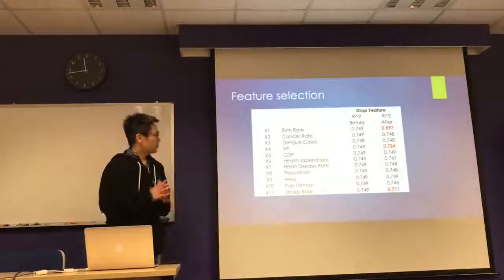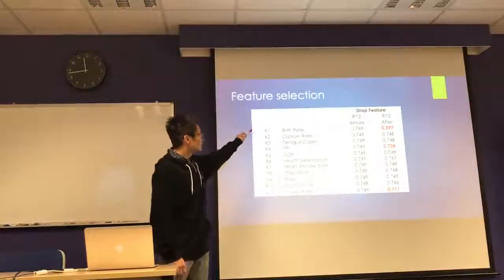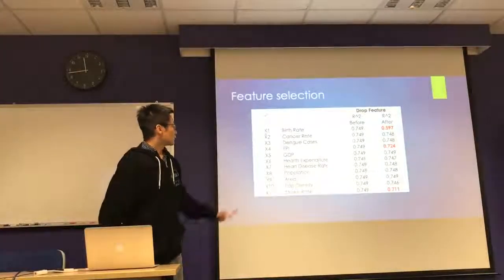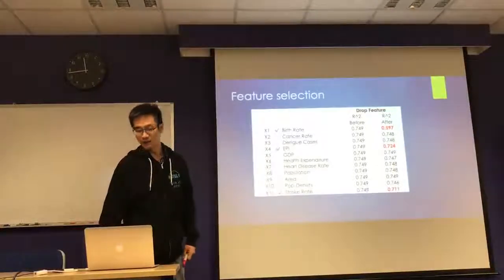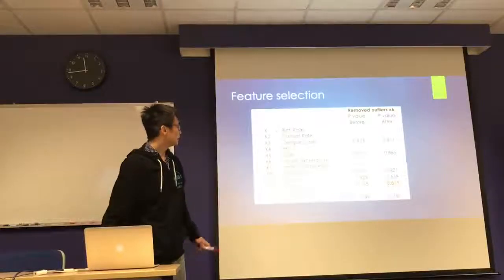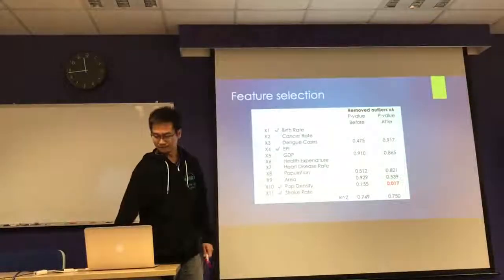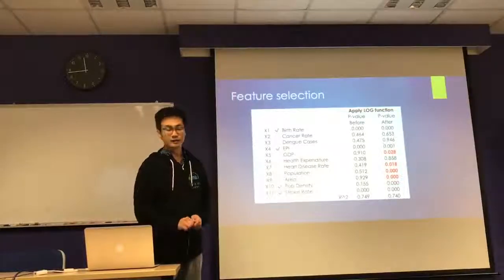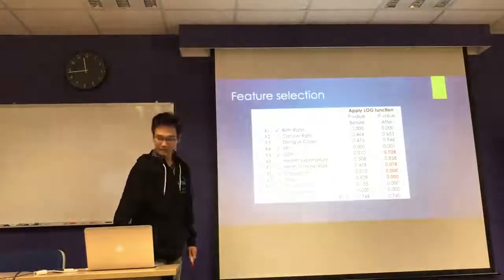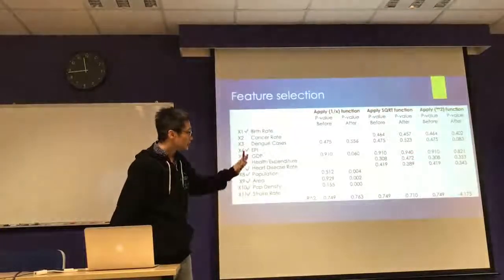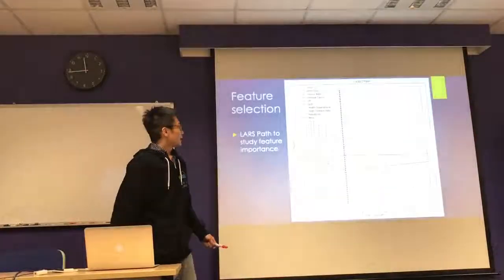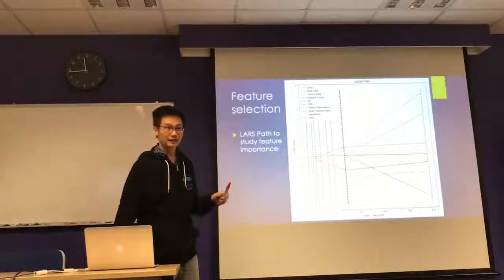First I did some feature selection. What I did was drop individual features one by one and see how much it affects the R-squared value. I decided to keep three features because without them the R-squared was noticeably affected. Next, I removed outliers and gained one more significant feature. Then I applied transformations to all the features, gaining four more significant features. I tried further square root and square transformations but saw no more improvement, so I stopped there. This suggests that the features selected are important.